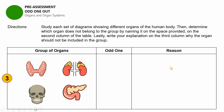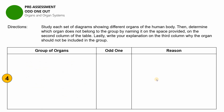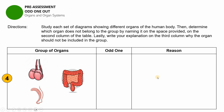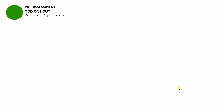This is the last item for this pre-assessment — item number four. These are the organs for this group. Please choose the odd one and state your reason for that answer. Finalize your answers. Let us now check your work.